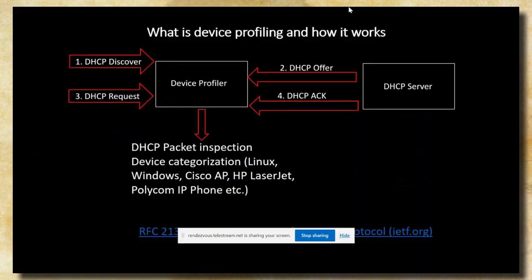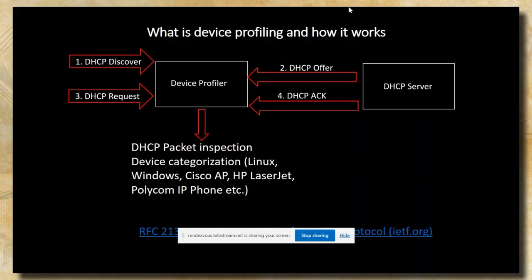Let's take a deeper look into the mechanics of DHCP profiling. On the left-hand side, we have a DHCP client that starts the conversation by broadcasting a DHCP Discover packet aimed at the DHCP server. If the server is there, it replies with a DHCP Offer containing a proposal for the client with IP address, subnet mask, default gateway, DNS server, and whatever you define. The client responds accepting the proposal, and the DHCP server acknowledges the transaction and terminates the session. In the middle of this process, a device profiler performs deep packet inspection of those packets.